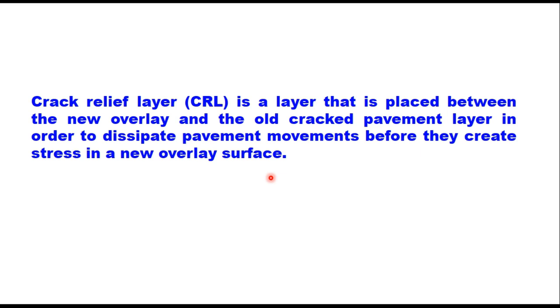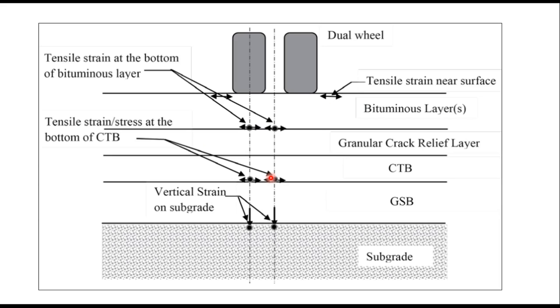In the construction of flexible pavements, IRC 37 recommends use of a cement treated base (CTB). The cement treated base is easily cracked under the action of load, and therefore it is recommended to provide a crack relief layer between the cement treated base and the bituminous layer. This crack relief layer delays the reflection of cracks from the CTB layer into the bituminous layer.